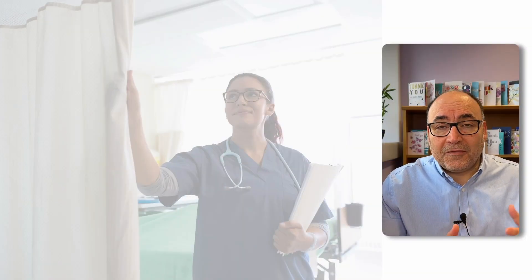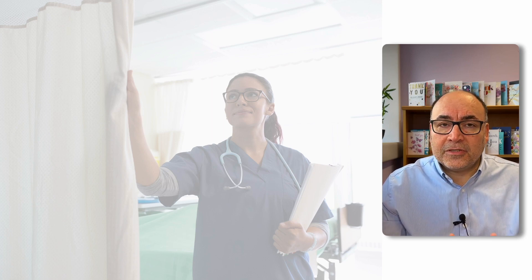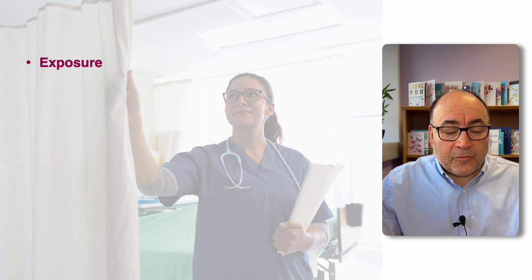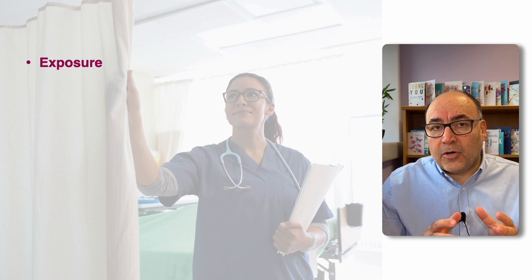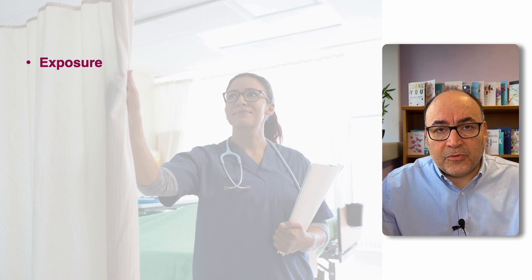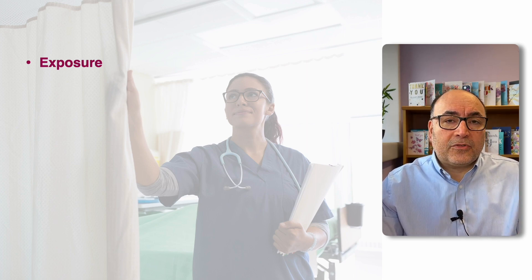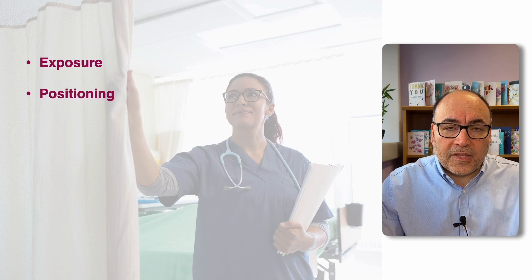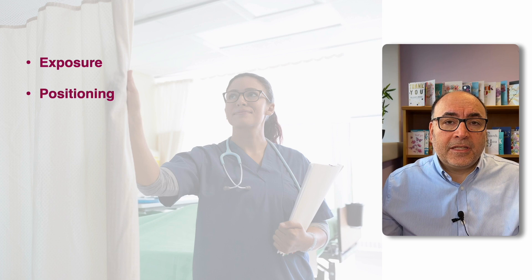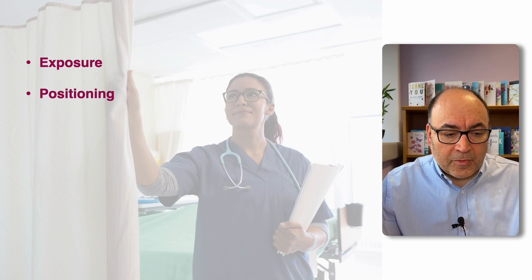Before you start touching the patient there are a few things you have to pay attention to and mention in the examination of the abdomen. The first is exposure — you want to expose the patient from the lower thorax down to the groin area, and no more. You also need to pay attention to the patient's positioning: they need to be on a flat bed and supine. If they're at a slight angle they can potentially be tensing their abdominal wall muscles, making it more difficult for both you and the patient.